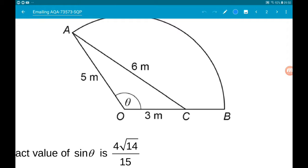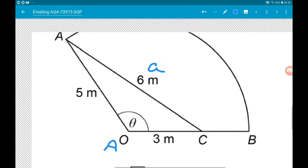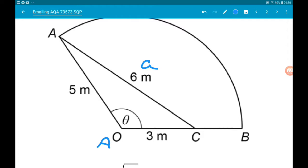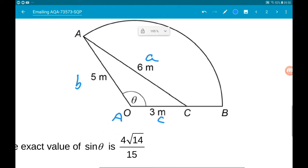So if we call this side A, this then is angle A, not to be confused with the A on the circle. And then we can call this side B and this side C. So using the cosine rule then,